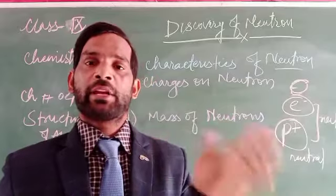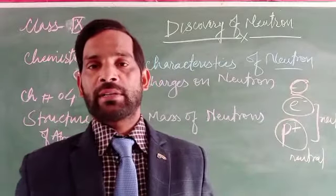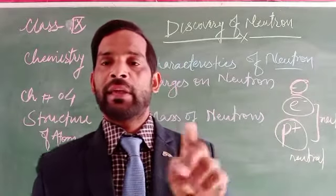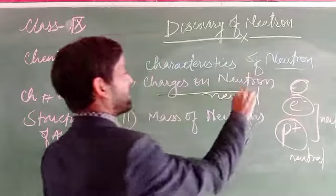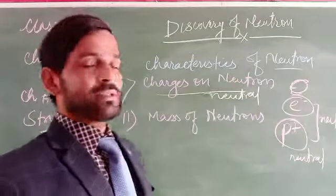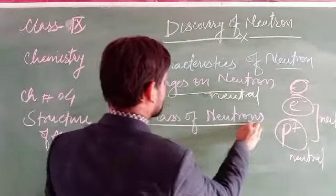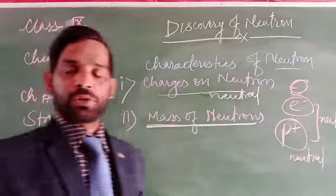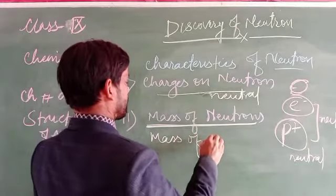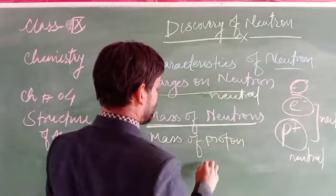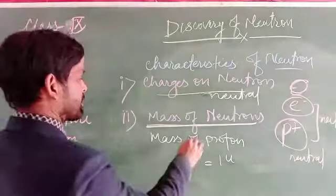Atoms of most elements contain electrons, protons, as well as neutrons. The neutron cannot have any charges — electrons have negative charge, protons have positive charge, but the neutron has no charge at all. So the neutron is called a neutral subatomic particle. However, the mass of the neutron is considered to be equal to the mass of the proton.